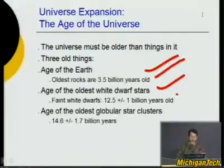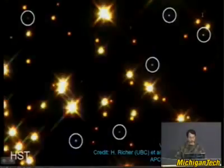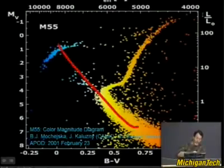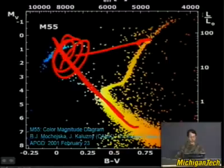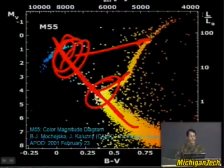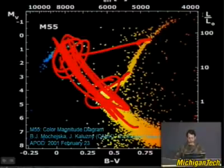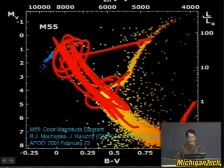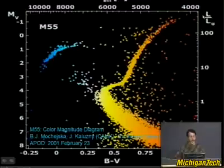From white dwarf cooling, we get a minimum universe age of about 12.5 billion years. Globular clusters tend to indicate even older ages. These are big clusters of stars; a plot called the main sequence shows where stars live. High-mass stars evolve off the main sequence — the point where stars start to leave, called the turnoff mass, tells you how old the cluster is. A very young cluster has all stars on the main sequence; a very old cluster has none. Finding the turnoff mass gives us another age estimate for the universe.